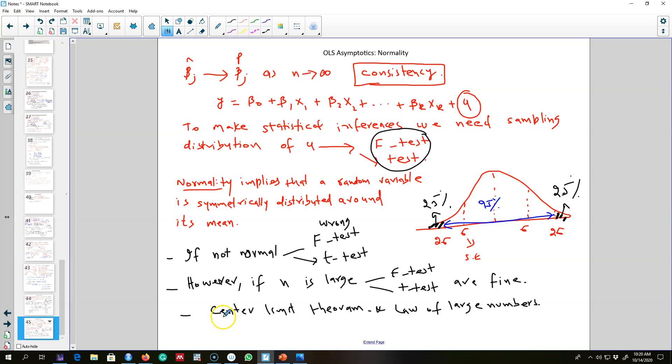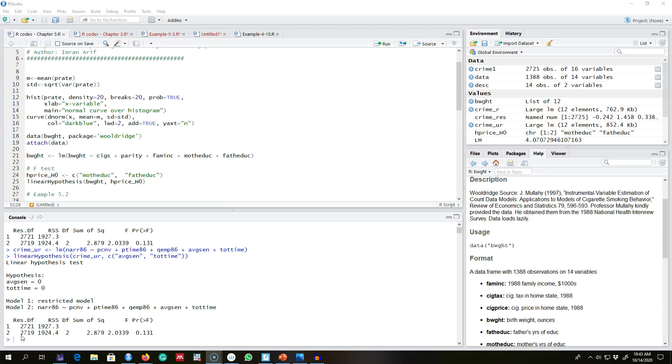In many cases, as we saw in the example of number of arrests, the variable number of arrests in 1986 is not normally distributed. Here is another example of a variable which is not normally distributed. We saw this model where we were trying to explain participation percentage p-rate in 401k pension plan.